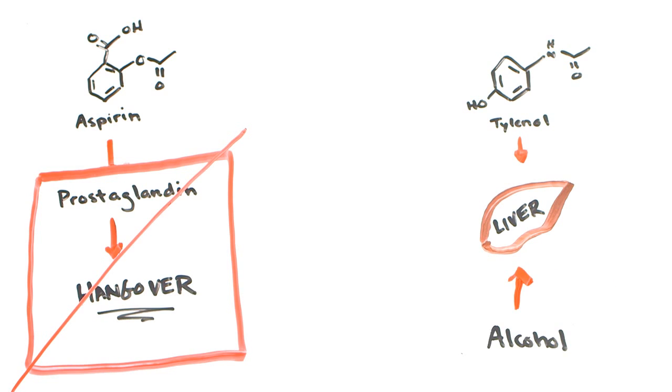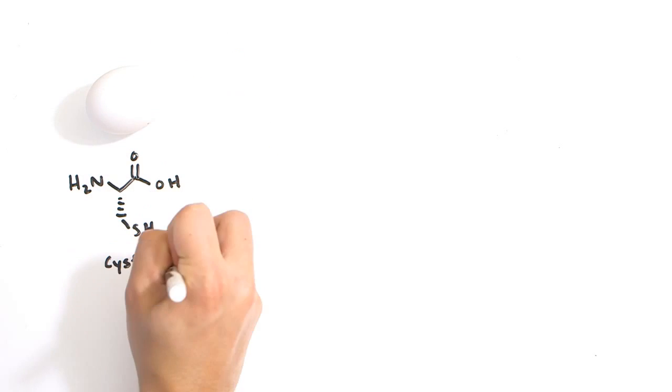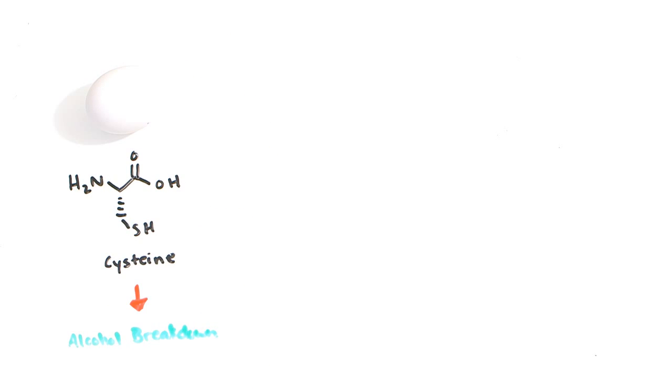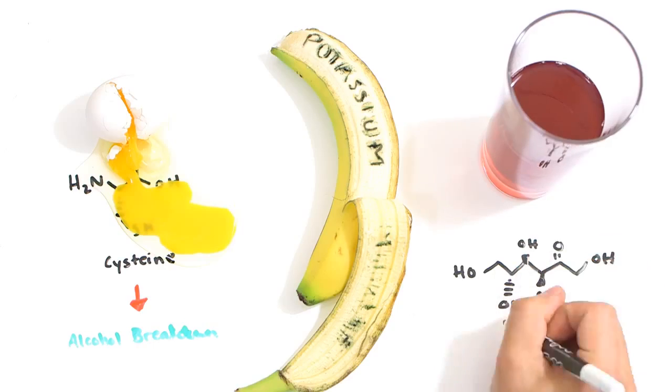In the morning, your breakfast can make all the difference. Eggs contain cysteine, an amino acid which is required in the breakdown of alcohol to acetate. Bananas contain potassium, which is essential for brain, muscle, and body function. And fruit juice contains vitamins and fructose, or fruit sugar, which gives you energy and increases the rate at which your body excretes toxins. But perhaps the most important rule?